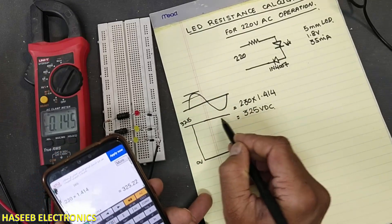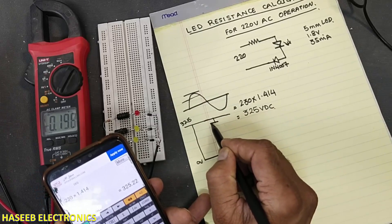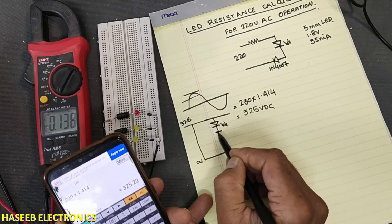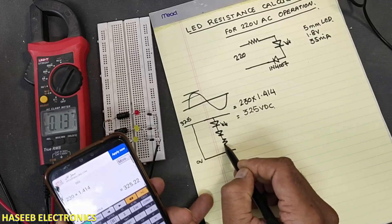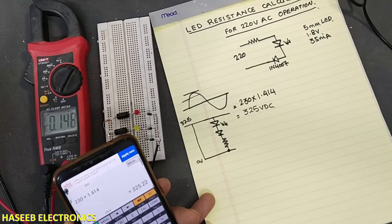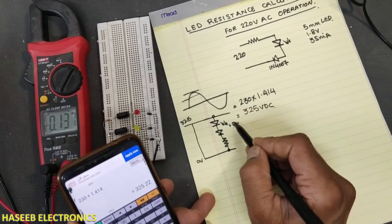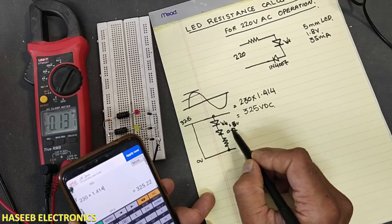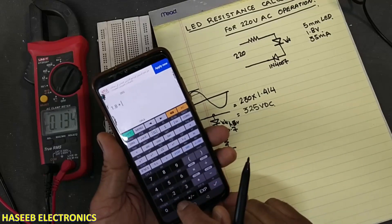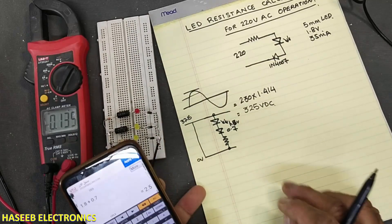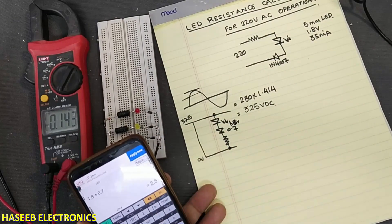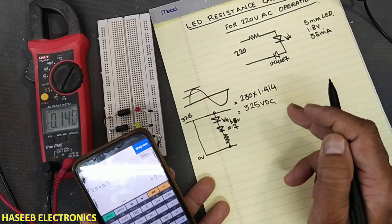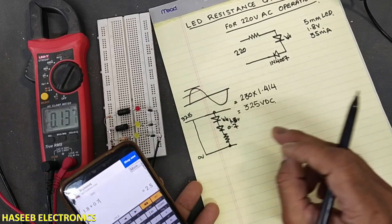In this 325 volt we want to use a LED diode and we need a resistor to drop the remaining voltage. Why the remaining voltage? Because LED is 1.8 volts, the diode 0.7 volts. 1.8 plus 0.7 equals 2.5 volts. The remaining voltage will drop across this resistor. LED maximum current is 35 milliampere but we will consider 20 milliampere to design it at mid-range.